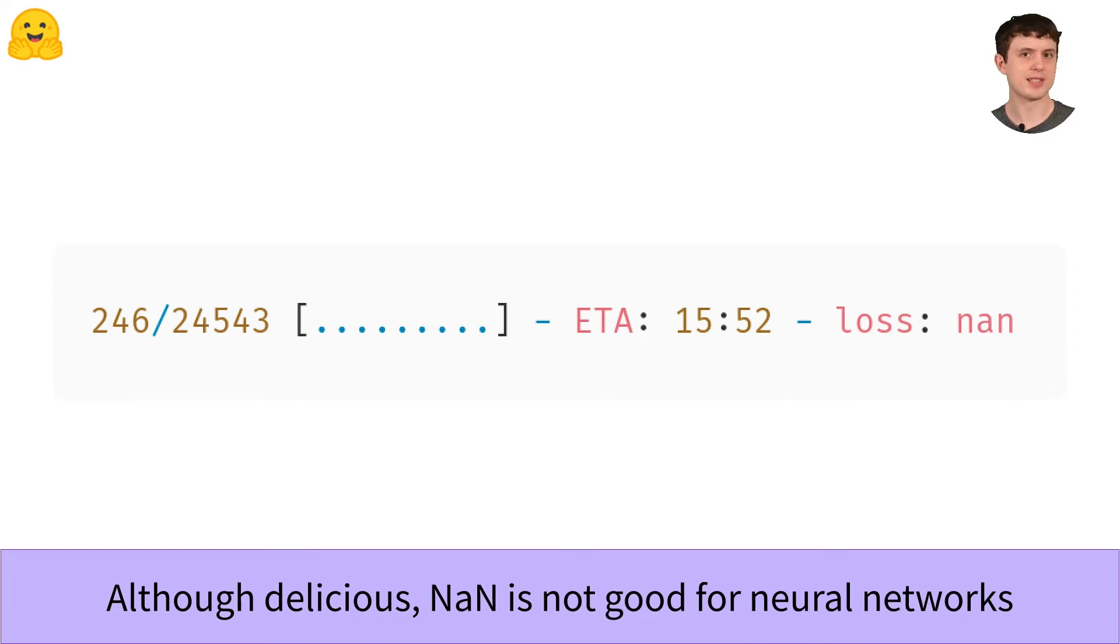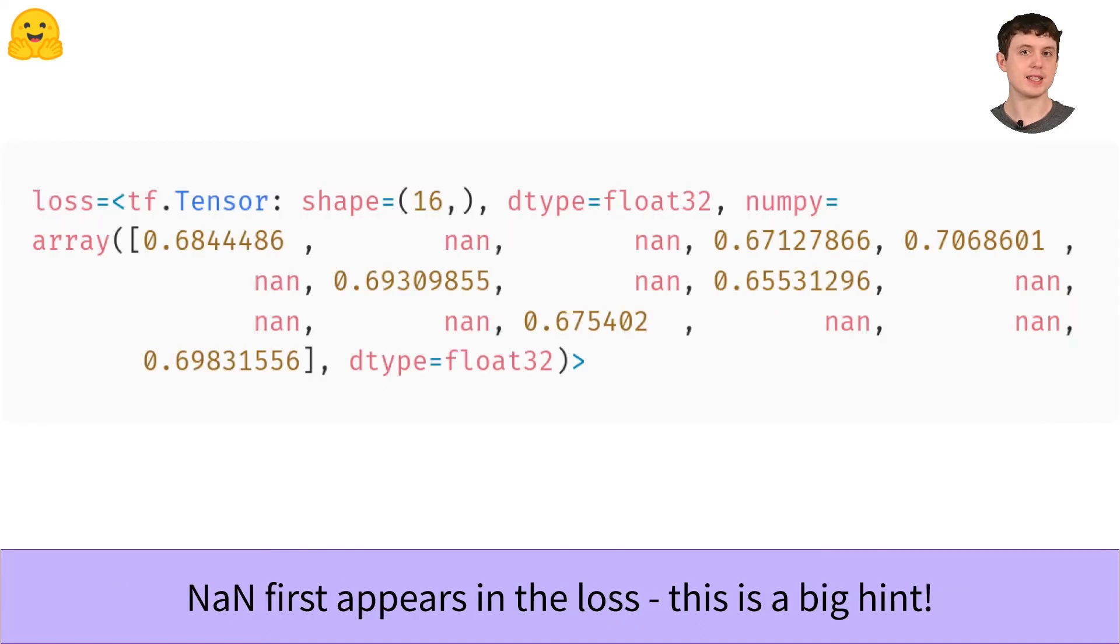But where did it creep in first? To find out, we need to go back to a point before the model was destroyed. We need to reinitialize the model and look at the outputs for the very first batch. When we do that, we see that the NaN first appears in the loss, but only in some samples. You can see this in more detail in the accompanying section of the course notes. But we find that if we look at the labels, the samples with a loss of NaN all have a label value of 2.